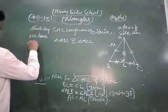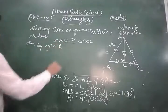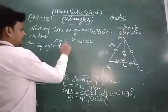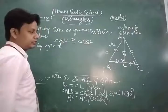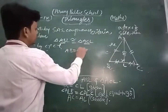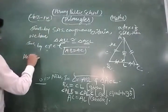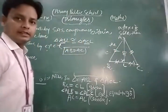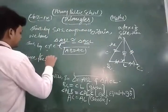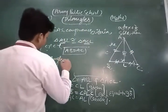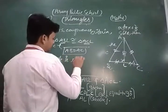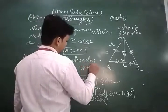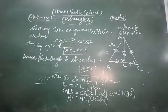Thus by CPCT — corresponding parts of congruent triangles are equal — AB is equal to AC. Hence, in that triangle two sides are equal, so the triangle is isosceles. Hence proved.